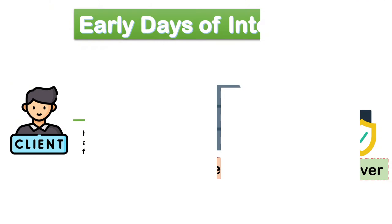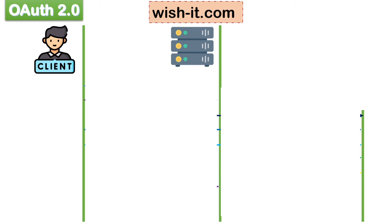Let us try to understand this with a very simple example. Suppose there is a website wishit.com, which many people use to send wishes over email. You want to use this website to wish your friends and contacts of your Gmail account on the occasion of Diwali or New Year. You do not want to create a new account in this website and want to make use of your Gmail account details only. Also, if you create a new account, you have to remember and manage its username and password. In this case, implementing OAuth will help you satisfy all your requirements.